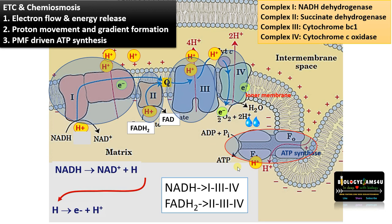In summary: high energy electrons from NADH and FADH2, produced during the Krebs cycle, move through different electron carriers in a chain releasing energy, finally reducing molecular oxygen to water. During this electron flow, energy is used to pump protons from the matrix side to the inter-membrane space, creating a gradient. There is a natural tendency for protons to move back, and the only way is through ATP synthase. When protons move through ATP synthase, the proton motive force synthesizes ATP by combining ADP and inorganic phosphate.